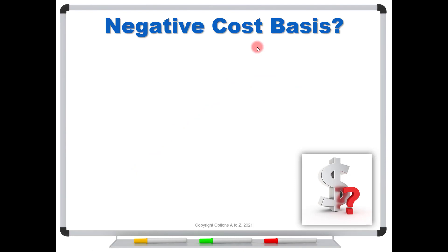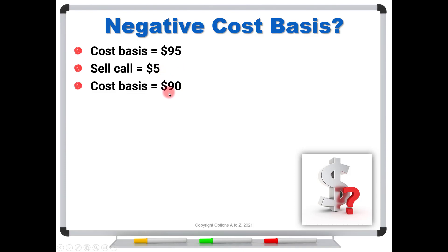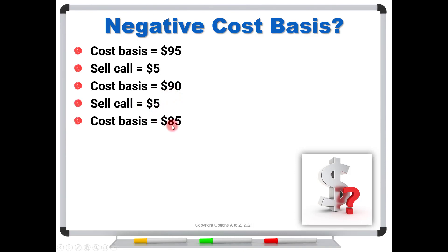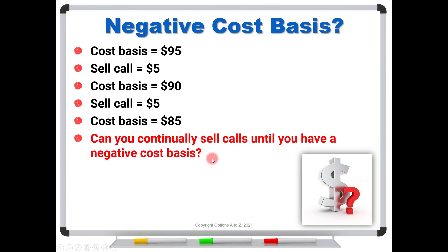So the idea is: can you write yourself into a negative cost basis? Right now we've got a cost basis of ninety-five. Let's say next week or next month the first call expires worthless and we sell another call for five bucks — now our cost basis is ninety. The following month we sell another call for five bucks and our cost basis is eighty-five. This process just continues, and you hear traders talk about this a lot, especially with cheaper stocks. They say, 'I've written myself into a negative cost basis.' That's really the question we want to address.